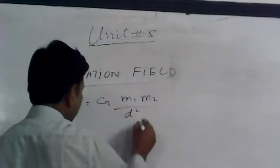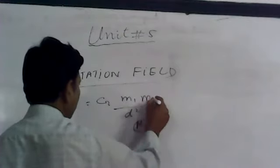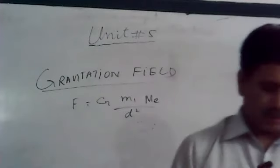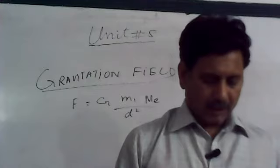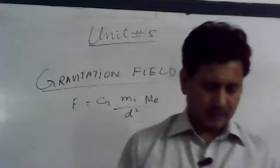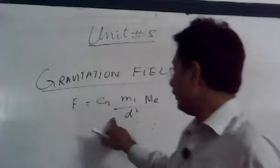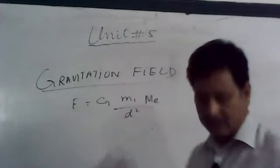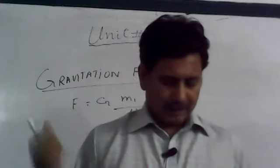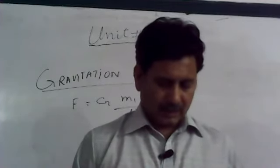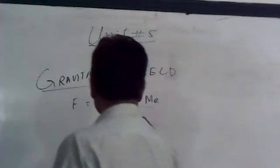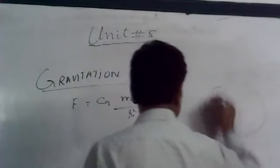When M1 is the mass of the Earth and M2 is the mass of a body, the gravitational force between our body and the Earth is given by F equals G M1 M2 over D squared, where M1 is the mass of the Earth and R is the radius of the Earth. The two bodies are attracted toward each other at a distance R.